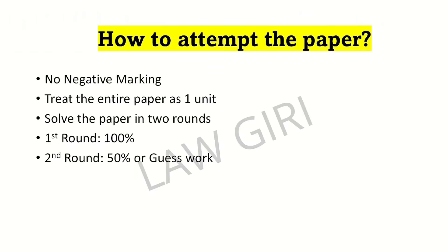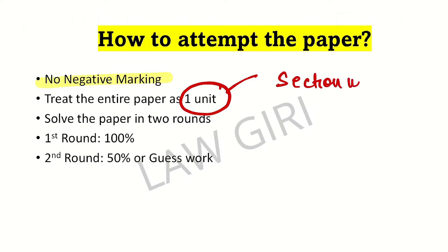How to attempt the paper? No negative marking — treat the entire paper as one unit. Some will say that section-wise paper will not come this year; it will come as a mixed paper. Now, you are confused — if it is mixed, then what will I do? Look, mixed is section-wise. I don't have a difference.